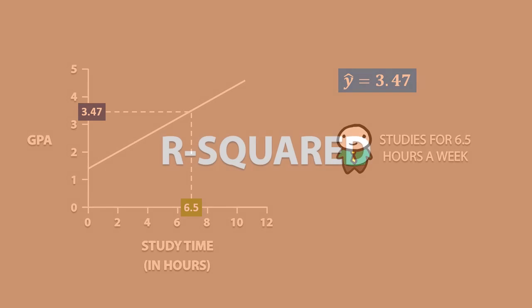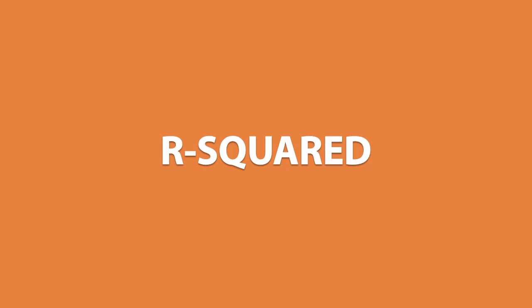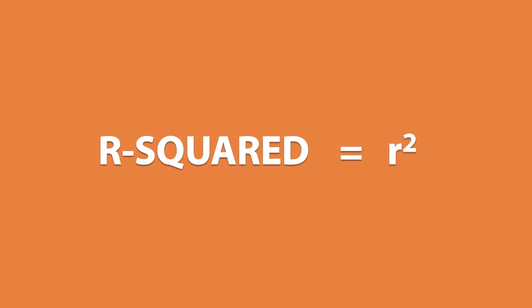The last thing I want to talk about is r-squared. r-squared is literally equal to r-squared, or r times r. Do not get confused between r and r-squared. r has values between negative 1 and positive 1, whereas r-squared only has values between 0 and 1.